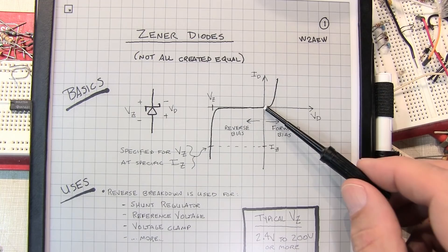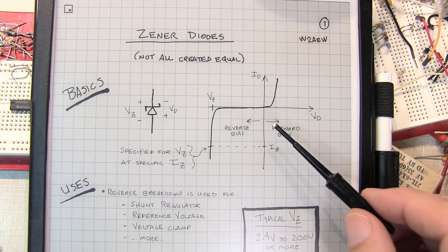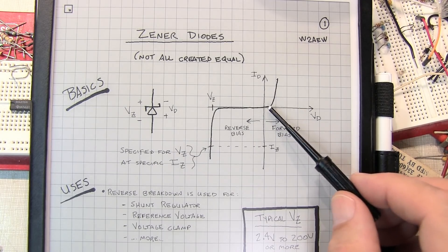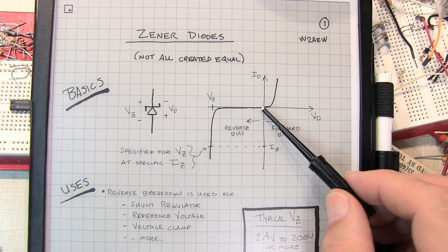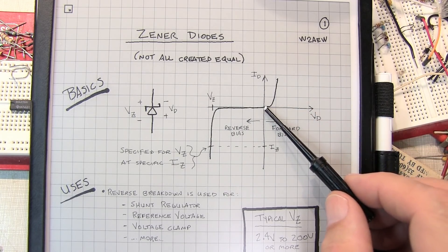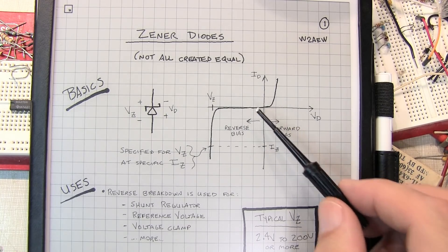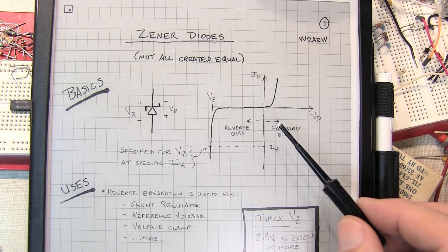Most of you are likely familiar with the IV, or voltage and current characteristics of an ordinary signal diode or rectifier diode, where as you forward bias it, it begins to conduct and allows current to pass, but when you reverse bias it, very little current flows.